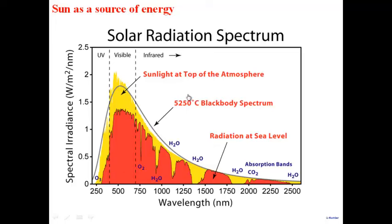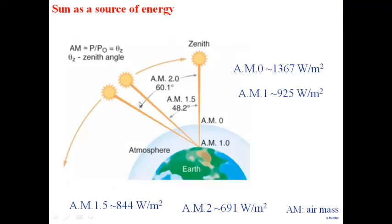That radiation is fairly small on the ultraviolet side. A lot of it is in the visible region, and quite a bit is in the infrared region. This is the solar radiation incident on earth, and this is what we would like to harness for electricity generation using a solar cell.